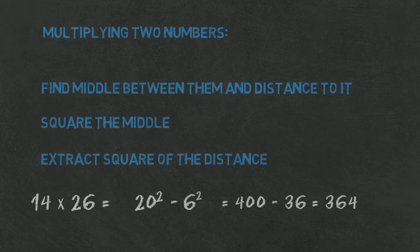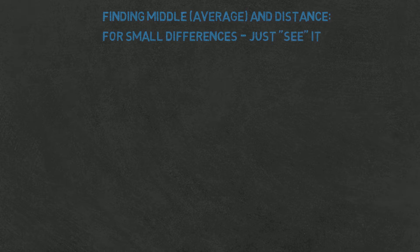Let's talk for a moment about using this method. While this method is very simple, there are two main challenges. First, how to find the middle? If you multiply close numbers, you can just see in your mind what is in the middle and what the distance is. For example, between 23 and 27 in the middle there is 25.